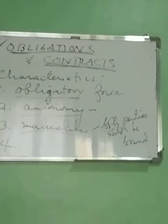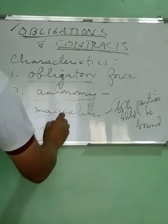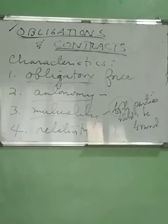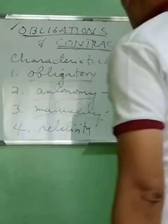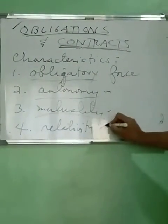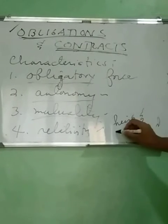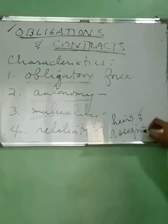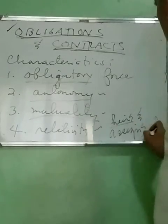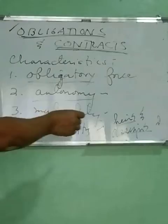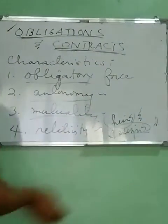Finally, we have what we call relativity of contracts. The word relative means you are bound — you and you alone, as well as your heirs and assigns. No other but you and your heirs and assigns. Relativity of contract means you entered into the contract, so it is you who is liable, including your heirs and assigns.